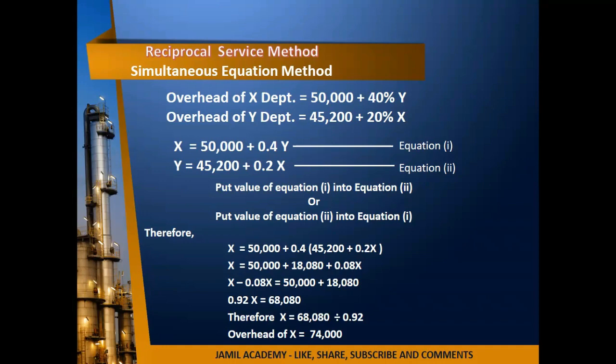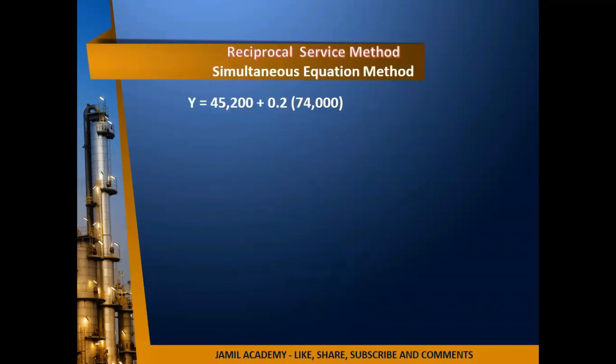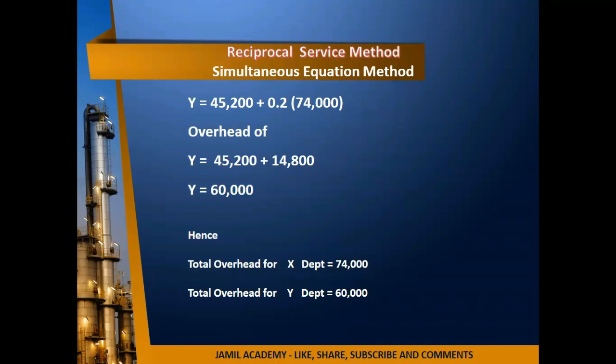Now substituting X = 74,000 into Equation 2: Y = 45,200 + 0.2 × 74,000 = 45,200 + 14,800 = 60,000. Therefore, the overhead of the Y department is 60,000. Hence, the overhead of the X department is 74,000 and the overhead of the Y department is 60,000.